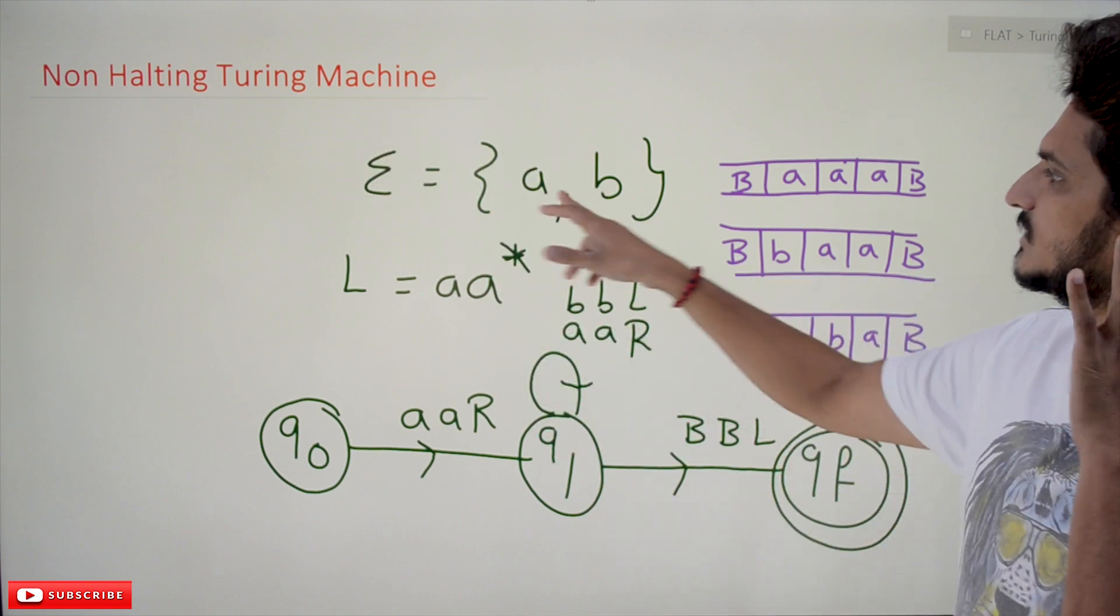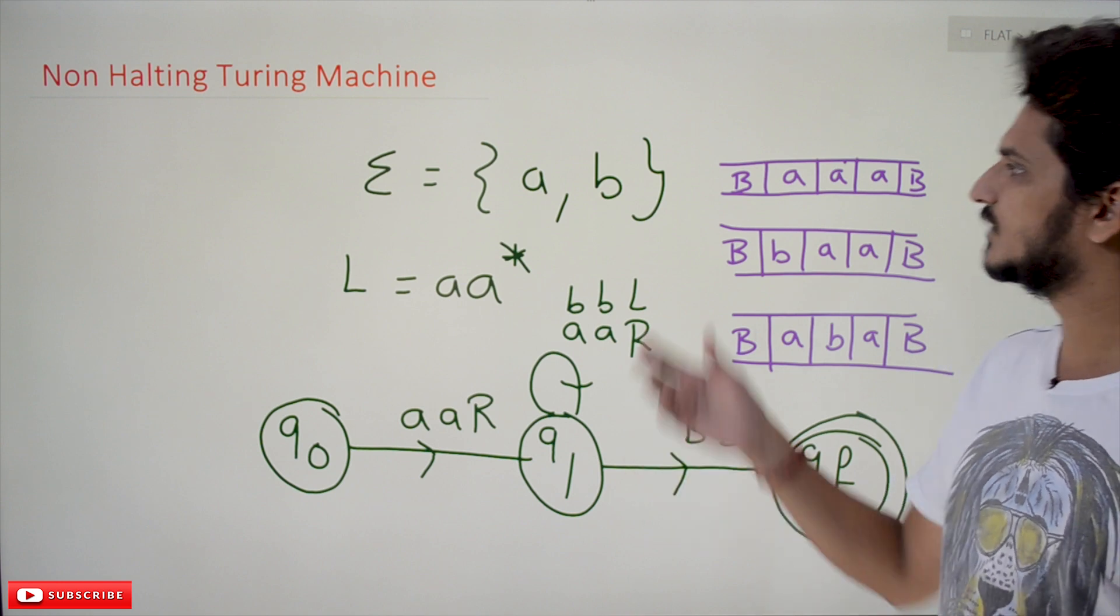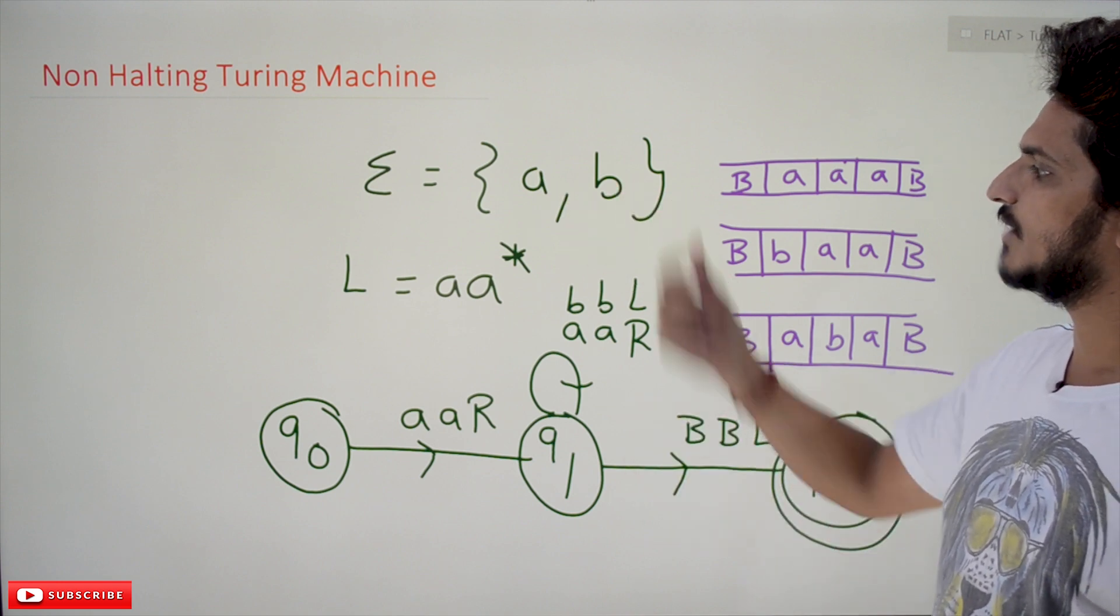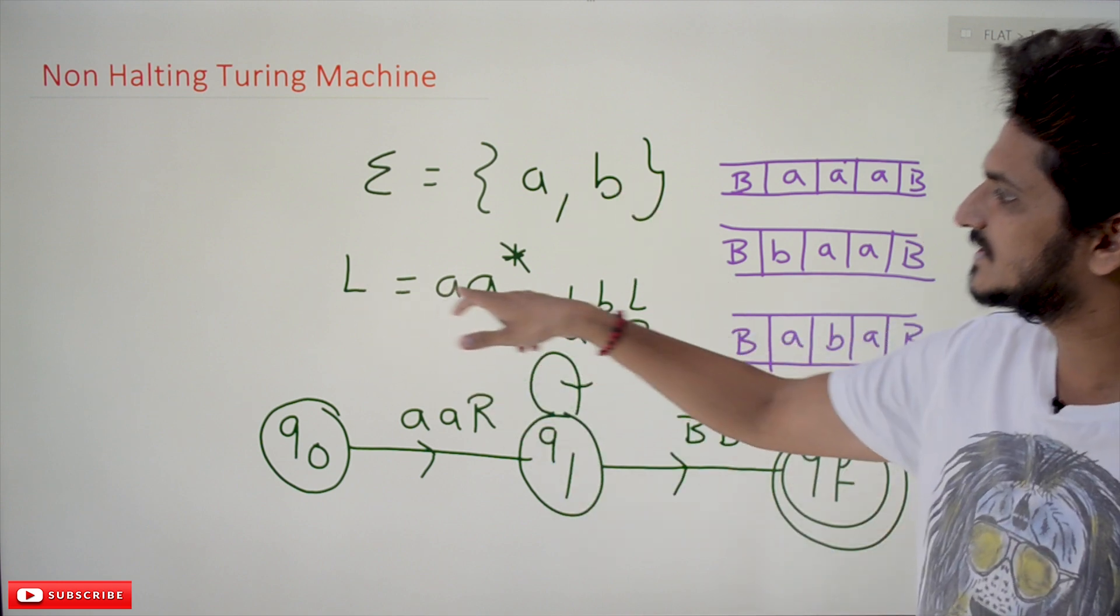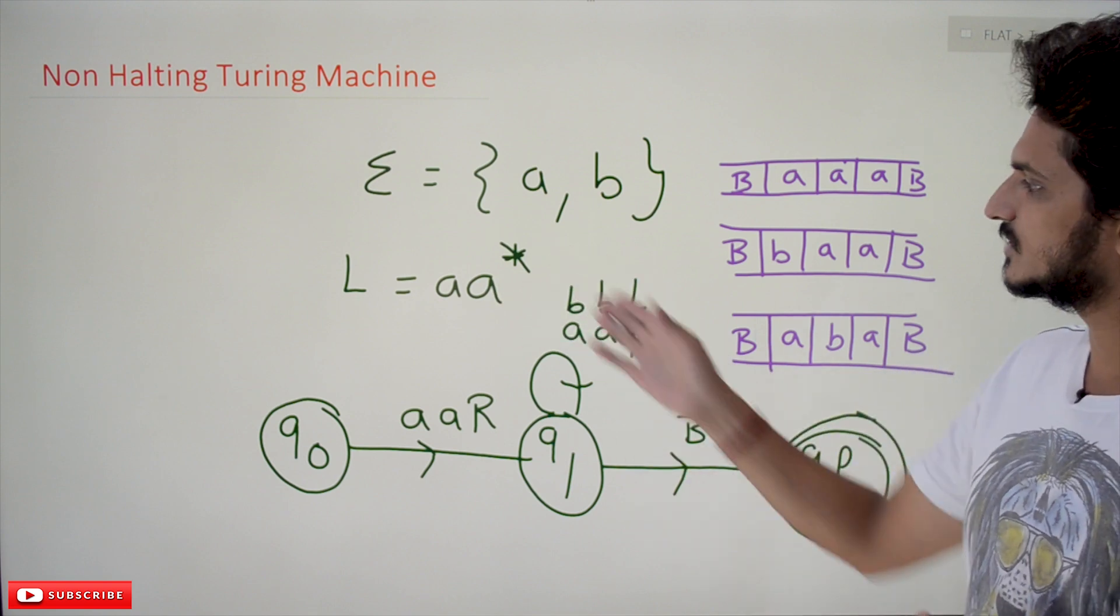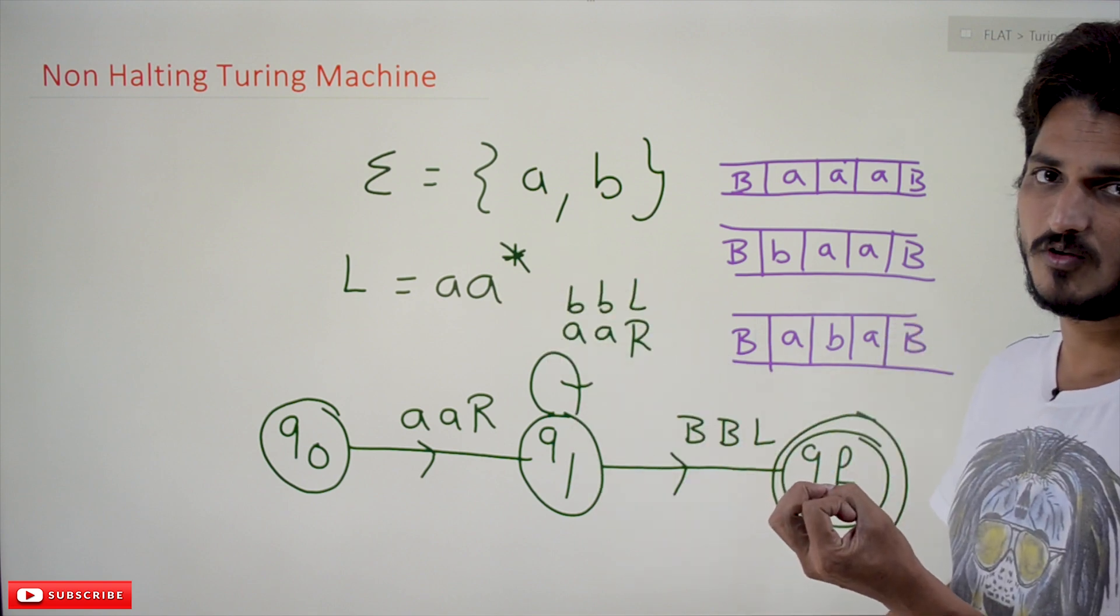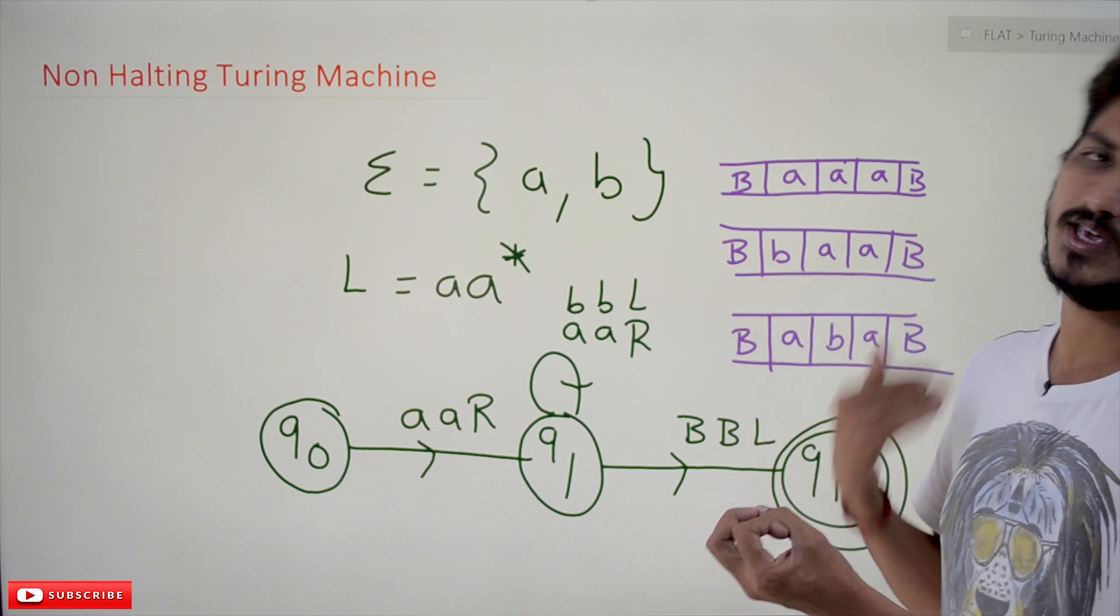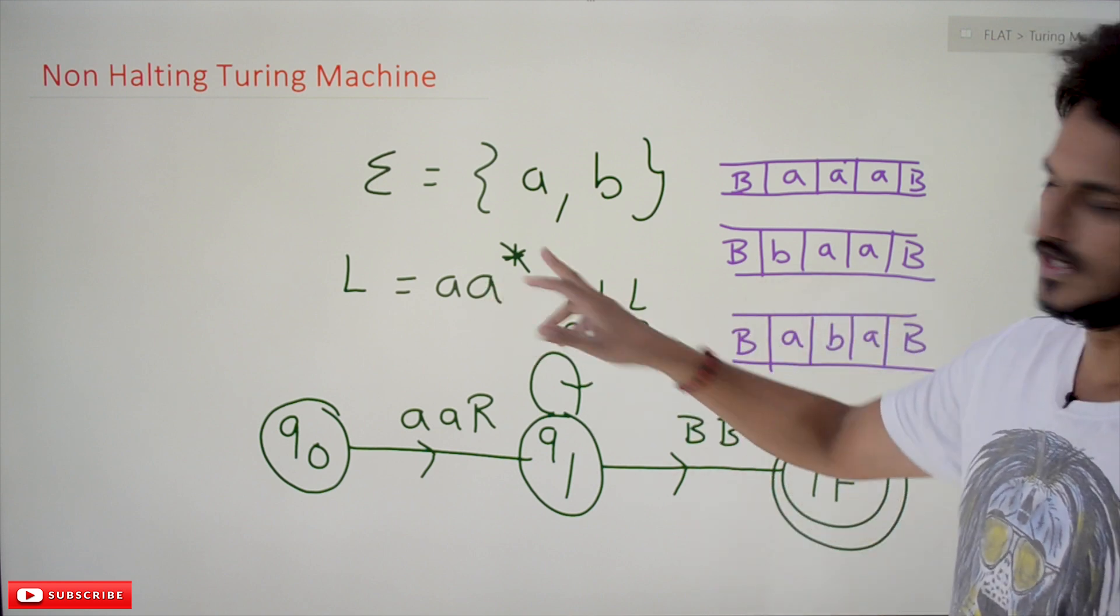Let's take an example: Sigma equals A, B. What's the meaning of that? The input symbols are A, B. And language L is given as A A star. What's the meaning of this language? At least one A should be found. After that, any number of A's can be accepted. This is what A A star means.